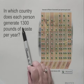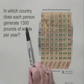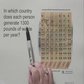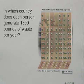Since 1,300 divided by 100 is 13 — in other words, this is the same as 13 hundreds — we look for a country that is represented by 13 symbols.